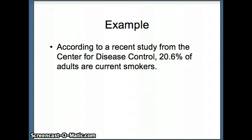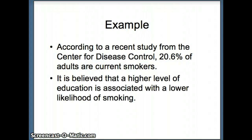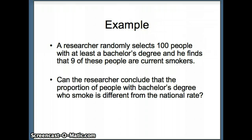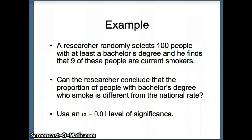Let's look at one more example. According to a recent CDC study, 20.6% of U.S. adults are current smokers. A researcher selects 100 people with at least a bachelor's degree and finds that 9 are current smokers. He wants to determine whether the proportion of people with bachelor's degrees who smoke is different from the national rate. For medical questions we use alpha = 0.01: P-value < 0.01 means reject H₀; P-value > 0.01 means fail to reject H₀.